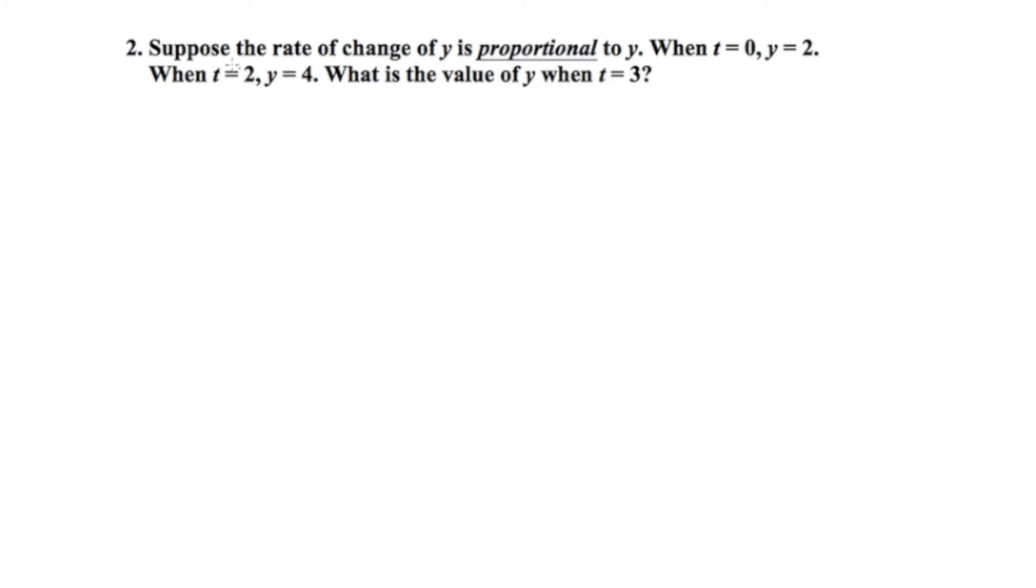So to start, let's look at the very first sentence. Suppose the rate of change of y is proportional to y. Well, we've seen this sentence already and this indicates our exponential growth or decay model, y equals c times e^(kt). So let's start by writing that. The next thing I'm going to do is take all of these data points that they gave us and organize them in a table of values. Instead of an xy chart, I'm going to make a ty chart. And in the end, what I'm trying to figure out is what is going to be the value of y when t is equal to three.